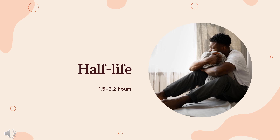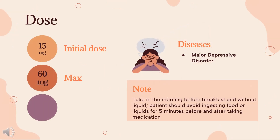Half-life: 1.5 to 3.2 hours in patients with normal renal and hepatic function. Dose for Major Depressive Disorder: For use in patients who have not responded adequately to other antidepressants. Not indicated for initial treatment due to potential for serious adverse reactions, drug interactions, and need for dietary restrictions. 15 mg orally every 12 hours, increased by 5 mg per dose at 1–3 week intervals to optimum response, not to exceed 60 mg per day. Dosage may be slowly decreased to maintain an adequate response.